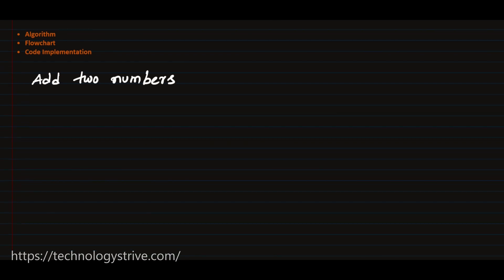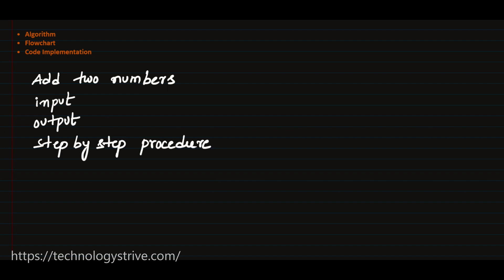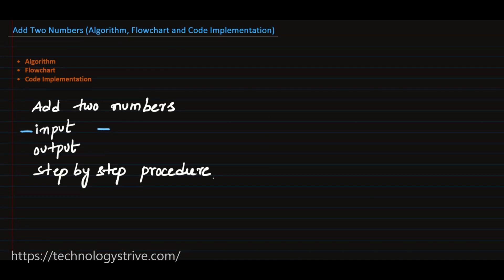Before writing the algorithm we have to be very sure what is the input, what is the output, and what is the step-by-step procedure. The input here is two numbers, since the problem is adding two numbers. The expected output is the sum of those two numbers, which is also a number.